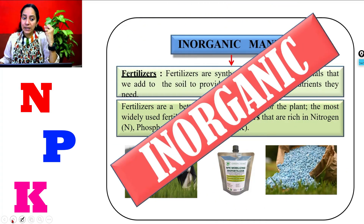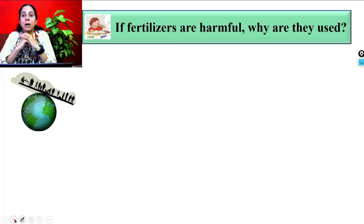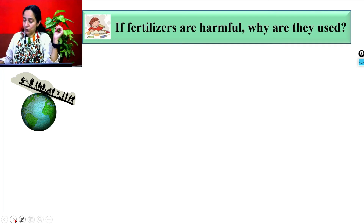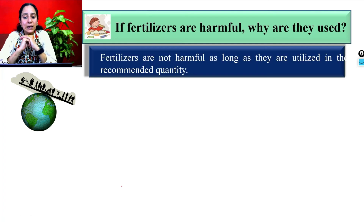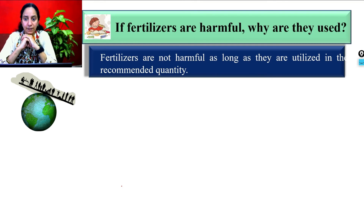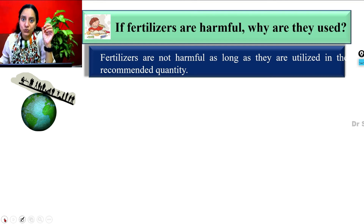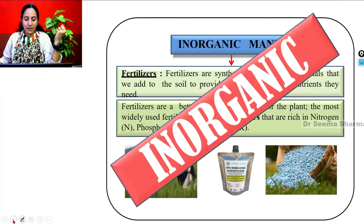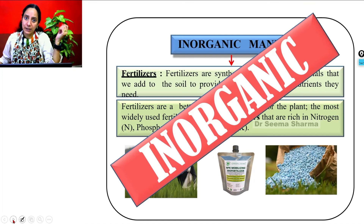Fertilizers are of inorganic origin, so if not properly handled they can create imbalance. However, these fertilizers are not harmful as long as they are used in the recommended quantity. The fertilizer should be used and handled very carefully. To decide whether to use fertilizers or organic methods, let's make a comparative account to analyze and interpret the importance of manure as well as fertilizer and their requirements.